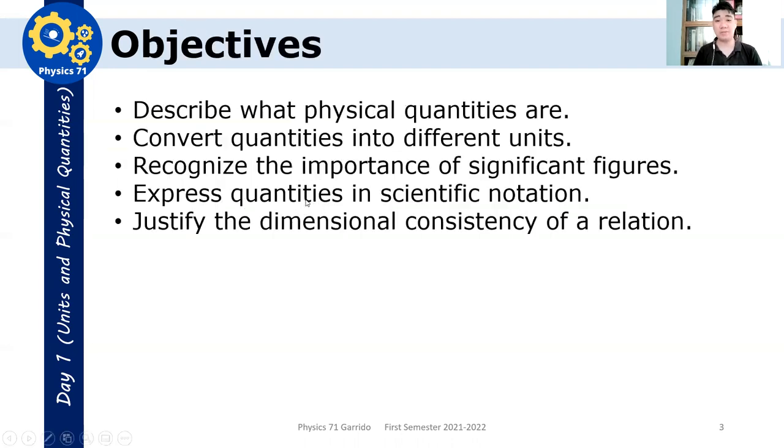So here are the objectives of this discussion. First, we describe what physical quantities are. Second, we convert quantities into different units. And then we recognize the importance of significant figures. And then we express quantities in scientific notation. I will not discuss this anymore on scientific notation because I'm assuming a lot of you should have known that. And then justify the dimensional consistency of our relation. This is on your so-called dimensional analysis. Are there any questions so far?